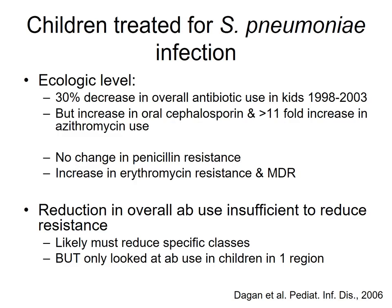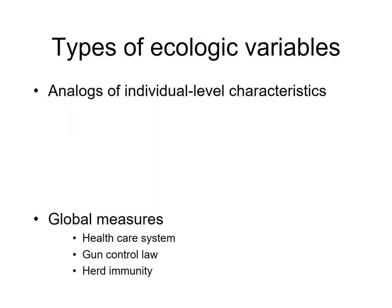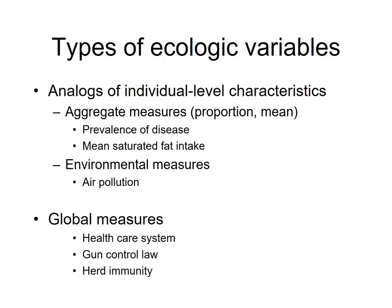This is an example of how we can combine individual data and ecological data. Types of ecological variables include analogs of individual-level characteristics — data based on aggregate measures such as overall antibiotic use, prevalence of disease, or mean saturated fat intake. Environmental measures like air pollution also exist. Global health measures are different and not based on individual-level data — examples include healthcare system policies, gun control laws, and herd immunity.